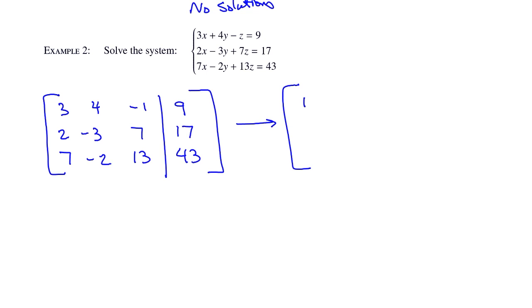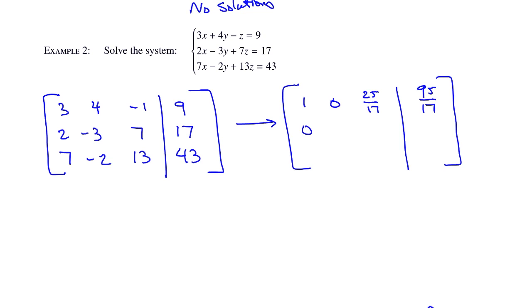We get 1, 0, 25 over 17, 95 over 17; 0, 1, negative 23 over 17, negative 33 over 17; and then 0, 0, 0, 0.